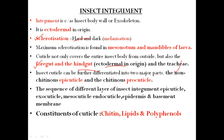From a non-cutaneous and cutaneous point of view, the insect cuticle is differentiated into two major parts: the non-cutaneous part is the epicuticle, and the cutaneous part is the procuticle. The sequence of layers from outside in is: epicuticle, exocuticle, mesocuticle, endocuticle, epidermis, and basement membrane. Always remember this sequence.